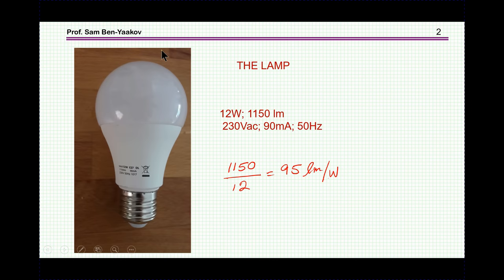Now the lamp that I'm going to discuss is this one. It's a 12 watt LED lamp specified at 150 lumens, designed for 230 volt AC. This is the average voltage in Israel. 90 milliamp input current and 50 hertz line frequency. If I divide the 150 lumens by the 12, I get 95 lumens per watt, which is sort of acceptable.